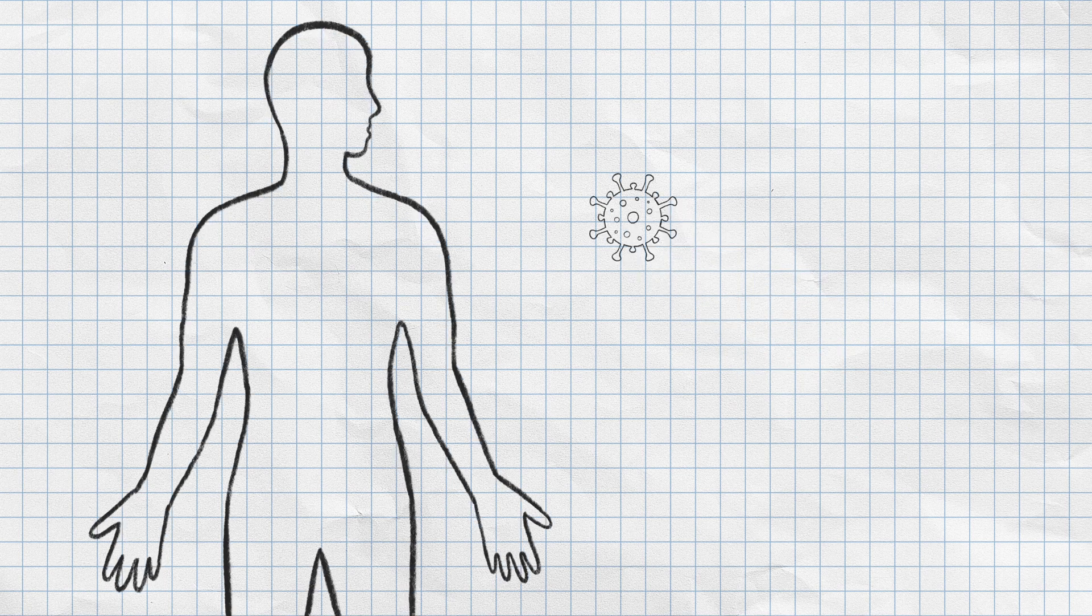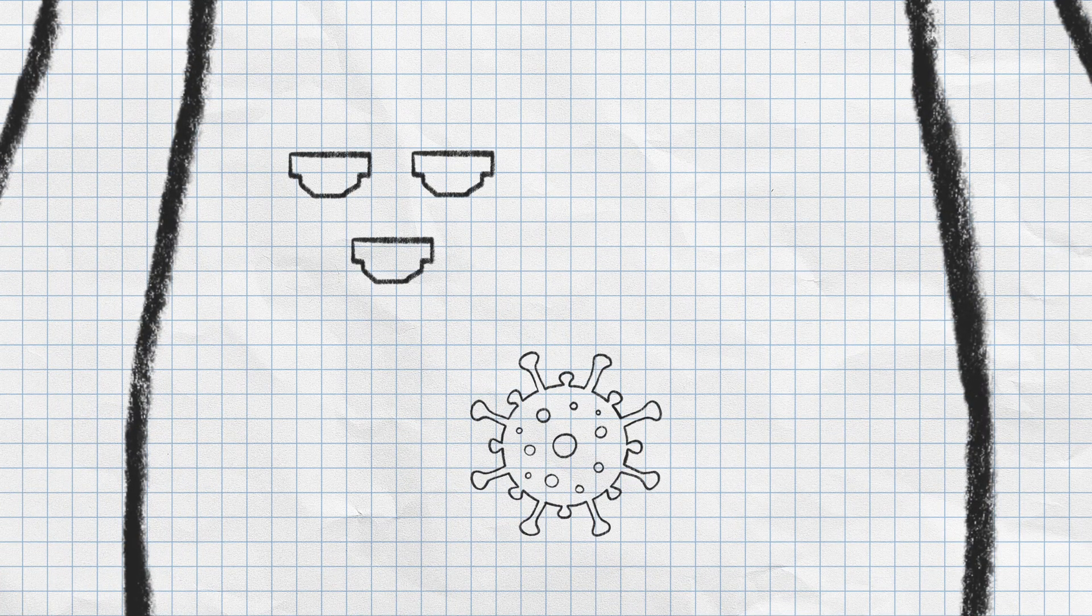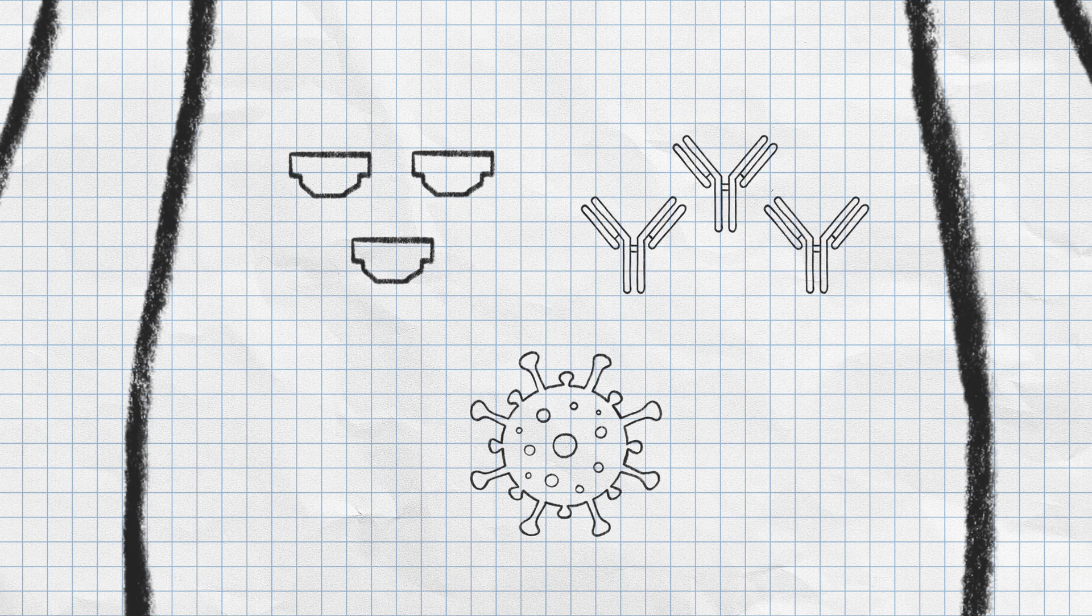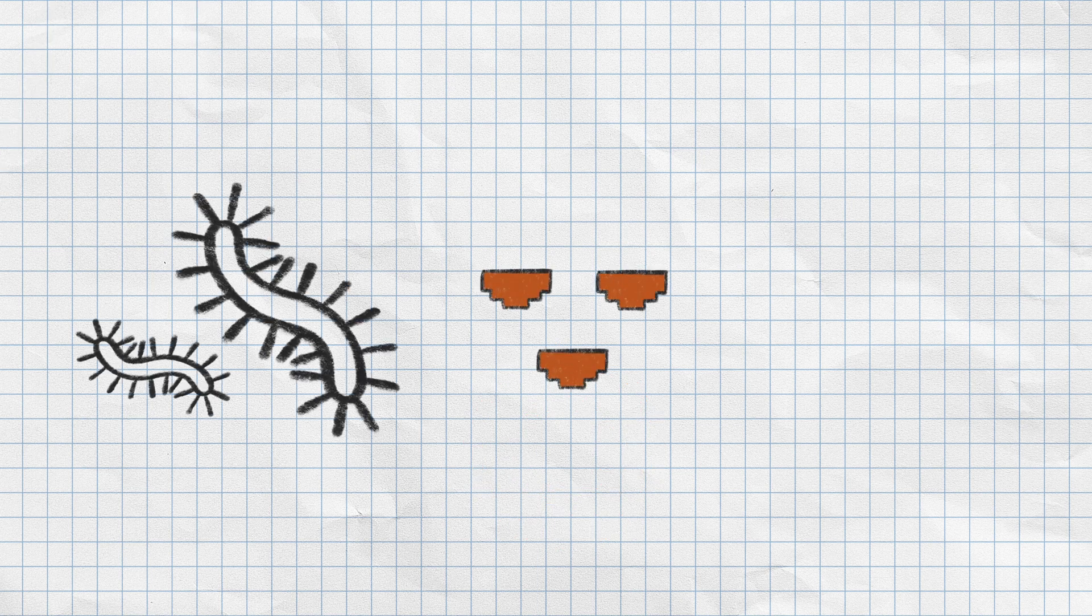When a new pathogen enters your body, it introduces something called an antigen that causes the immune system to form antibodies, your body's tools for identifying and targeting the invader. For every new pathogen and its antigens that your body sees, the body needs to build specific antibodies.